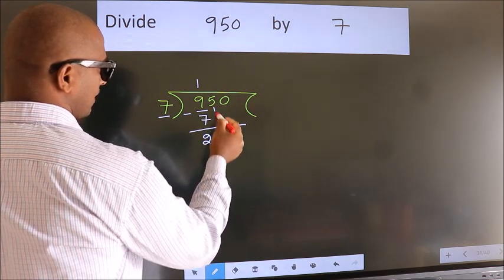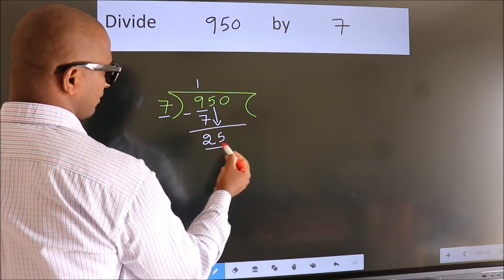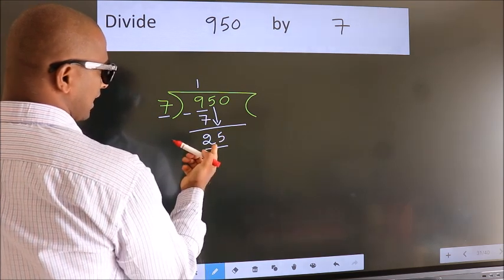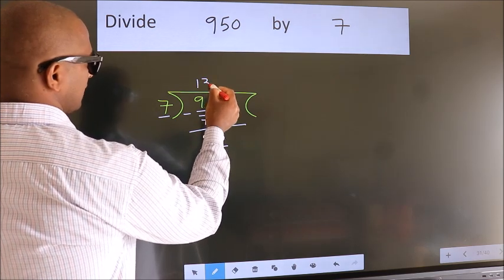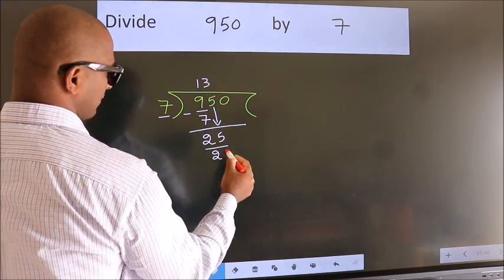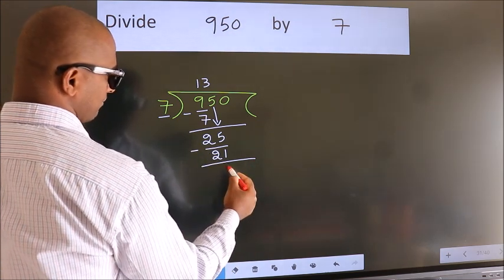After this, bring down the beside number, so 5 down, so 25. A number close to 25 in 7 table is 7 3s 21. Now we subtract, we get 4.